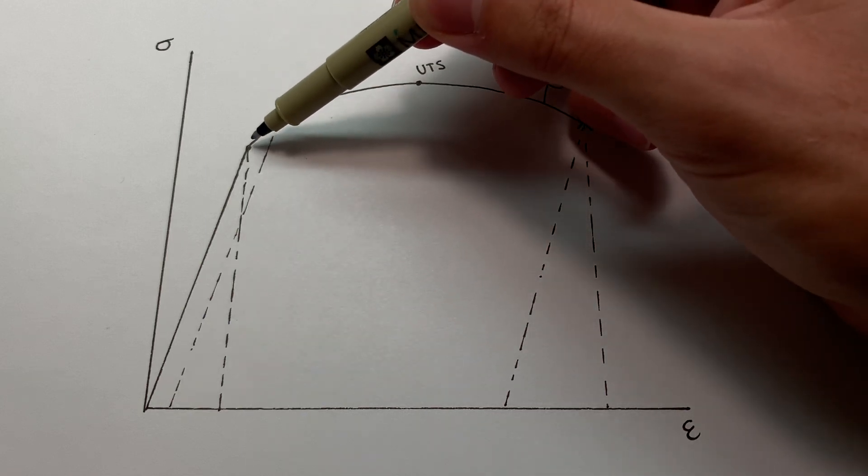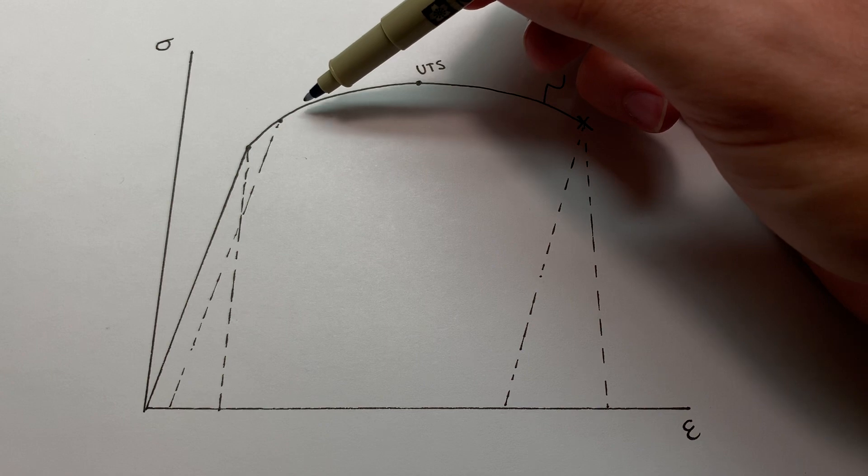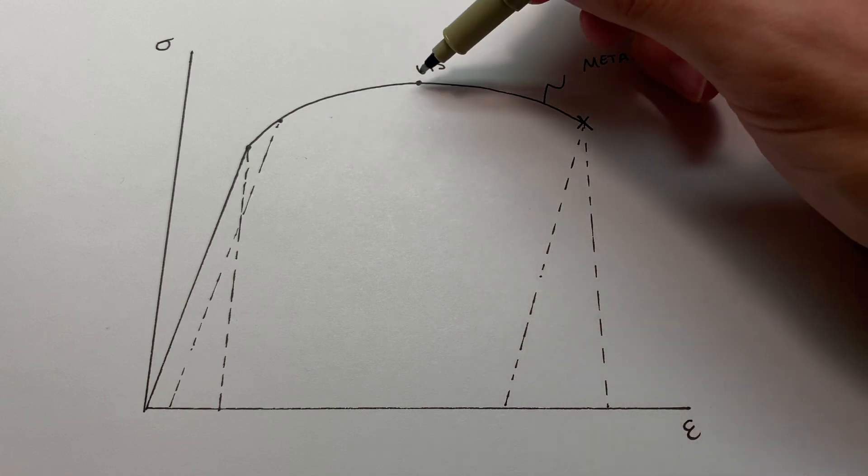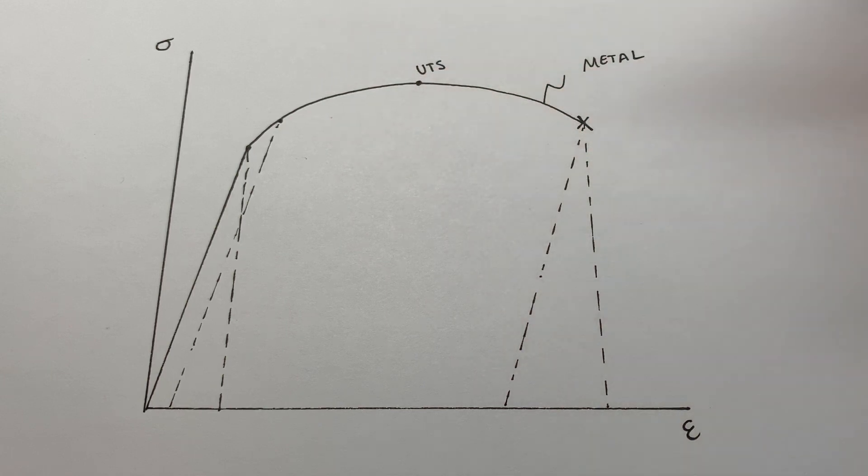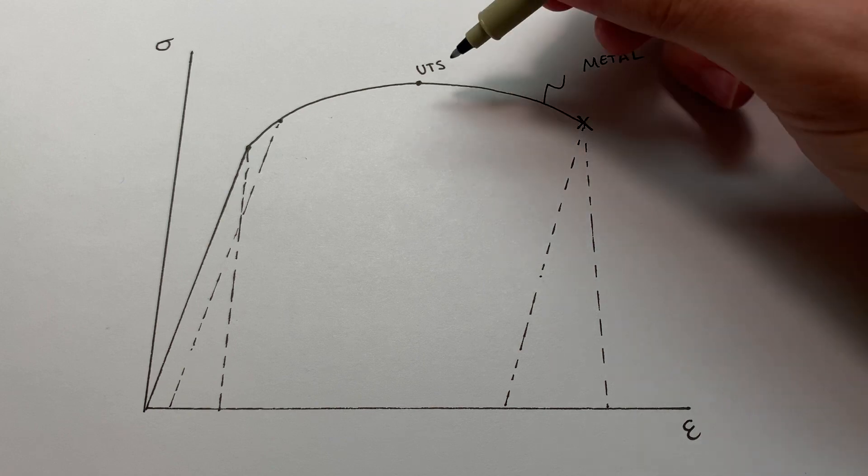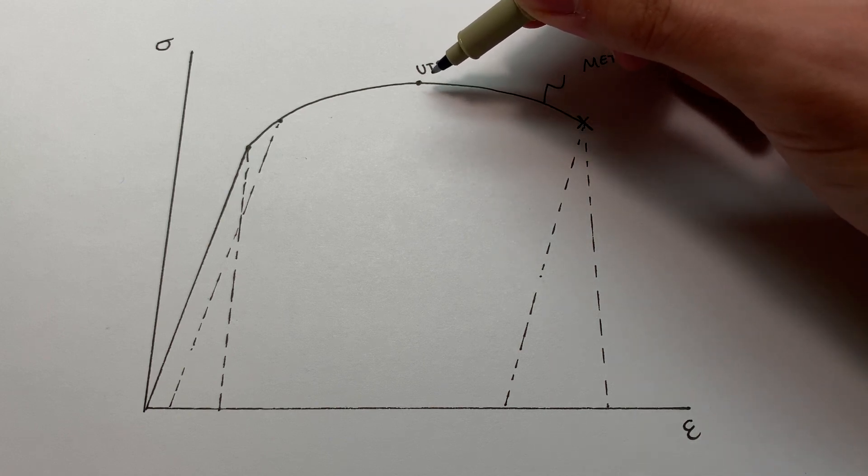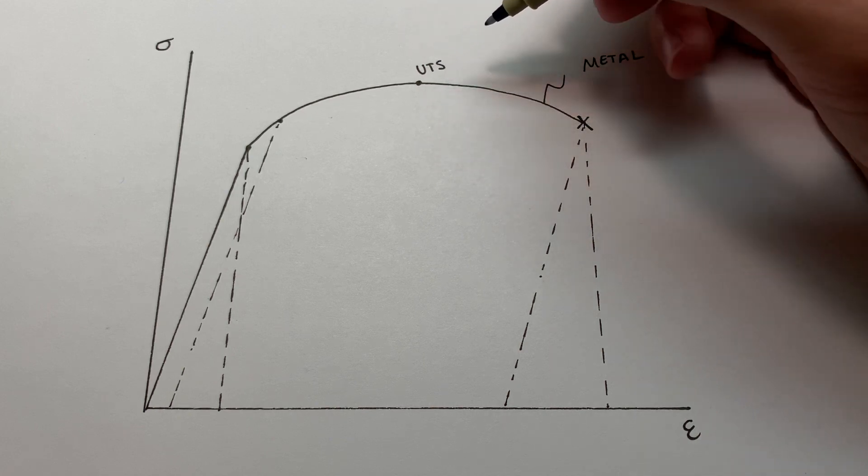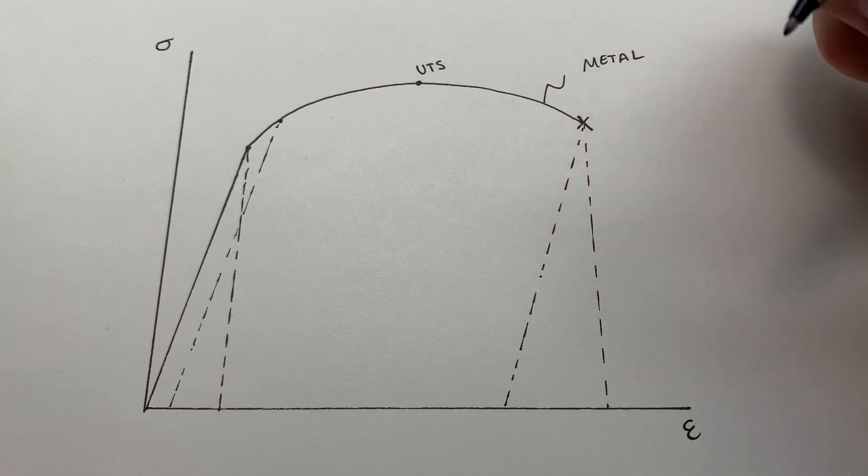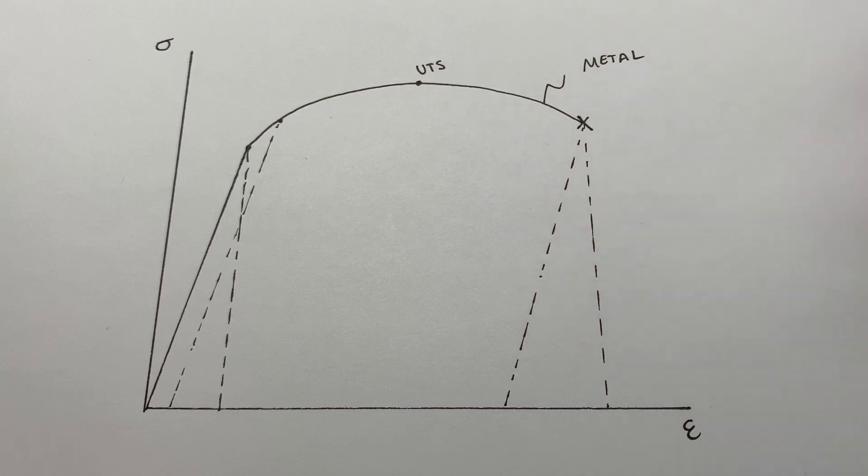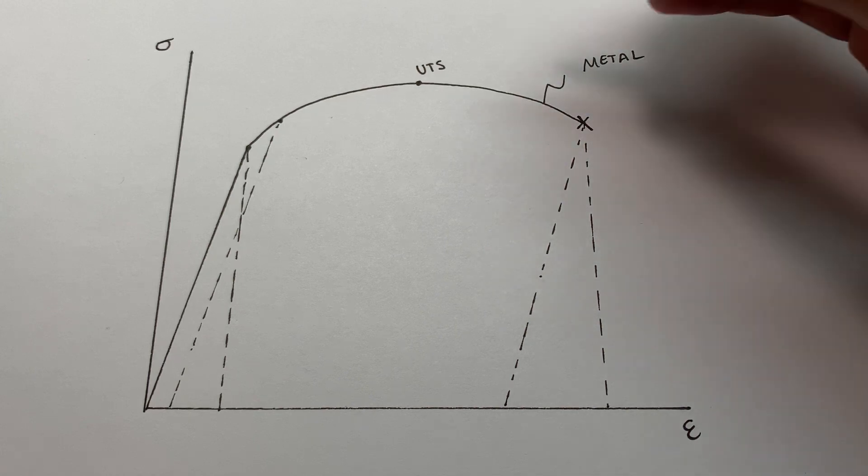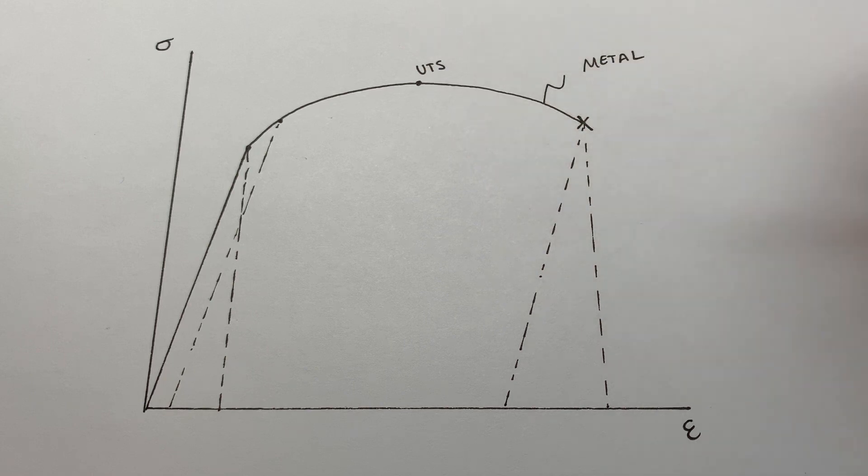Then you reach this area where it begins to yield and deform plastically up until the point where it reaches its UTS, its ultimate tensile strength, at which point deformation stops being uniform across the sample and it gets concentrated at some point in the middle where there was a stress concentration. The tension begins to expand that at a disproportionate rate and it begins to neck around there until it fractures.